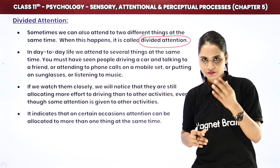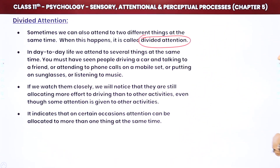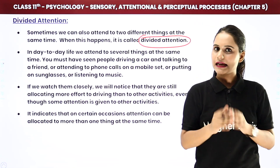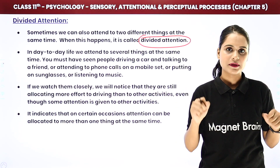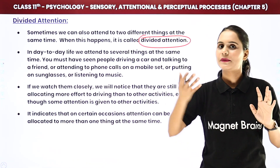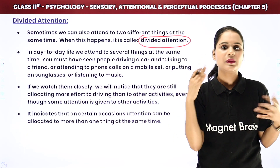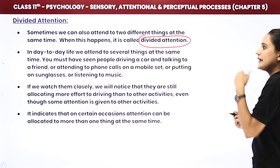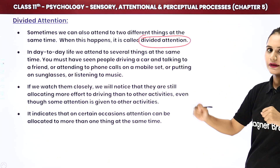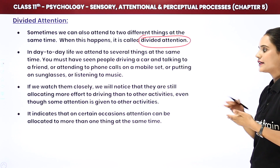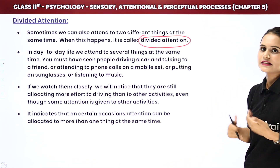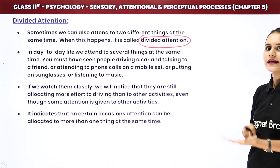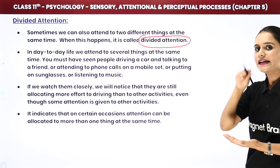Now here, when we focus on this whole activity, we will see that most of our attention is on one thing — obviously, on driving. But along with that, we are also able to give a little attention to what our friend is saying or whoever we are talking to on the phone. So your primary attention is on driving, and secondarily you are giving some attention to the conversation. So you are able to give attention to two things at once — that is called your divided attention.